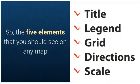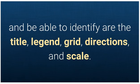So the five elements that you should see on any map and be able to identify are the title, legend, grid, directions, and scale.